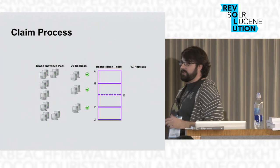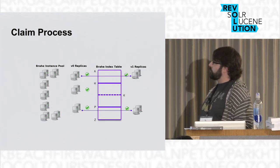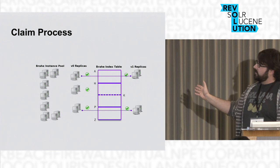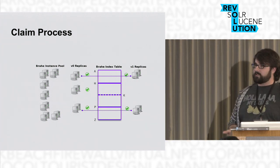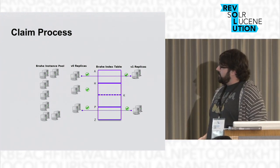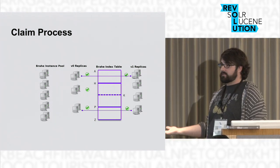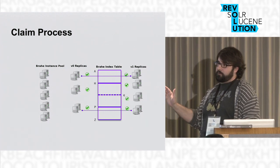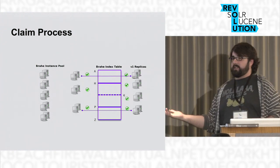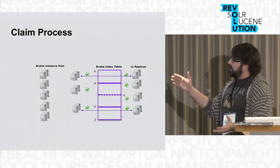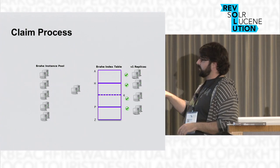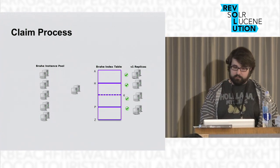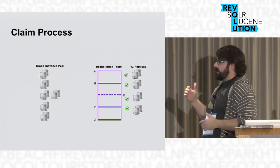If one shard in the middle is representing a much larger region, it'd be great to just split it. You create a new version — say, splitting H-to-P into H-to-K and K-to-P. The top and bottom shards already represent the same key ranges, so they migrate straight over. The middle shards go through the same claim process, pull data from HBase, mark themselves online. Then version zero isn't needed anymore — it gets deleted, and the old shard returns to the pool.